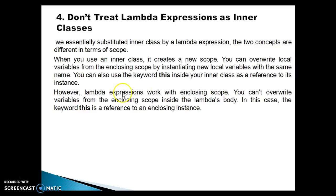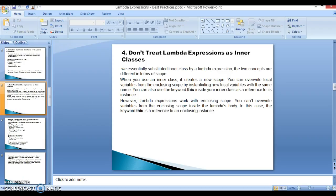However, lambda expressions work with the enclosing scope. We cannot override variables from the enclosing scope inside the lambda body. In this case, the keyword 'this' is a reference to the enclosing instance. So when you use the 'this' keyword inside a lambda expression, it refers to the instance of the class where the lambda expression is written. For example, if you write a lambda expression within the Test class, then 'this' represents the instance of the Test class.